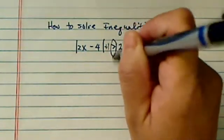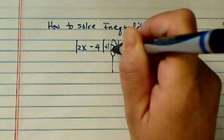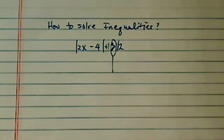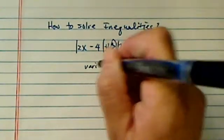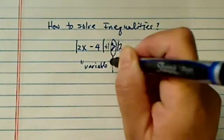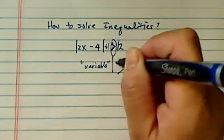The best way to start solving inequality is first to recognize if it's larger than or smaller than. And the way you rate it, it's always from the variable side.